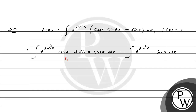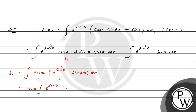Let us call the first part I1. I1 can be solved by arranging the terms. We write e^(sin²x) · cosx · sin2x dx and identify the first function and second function for integration by parts.